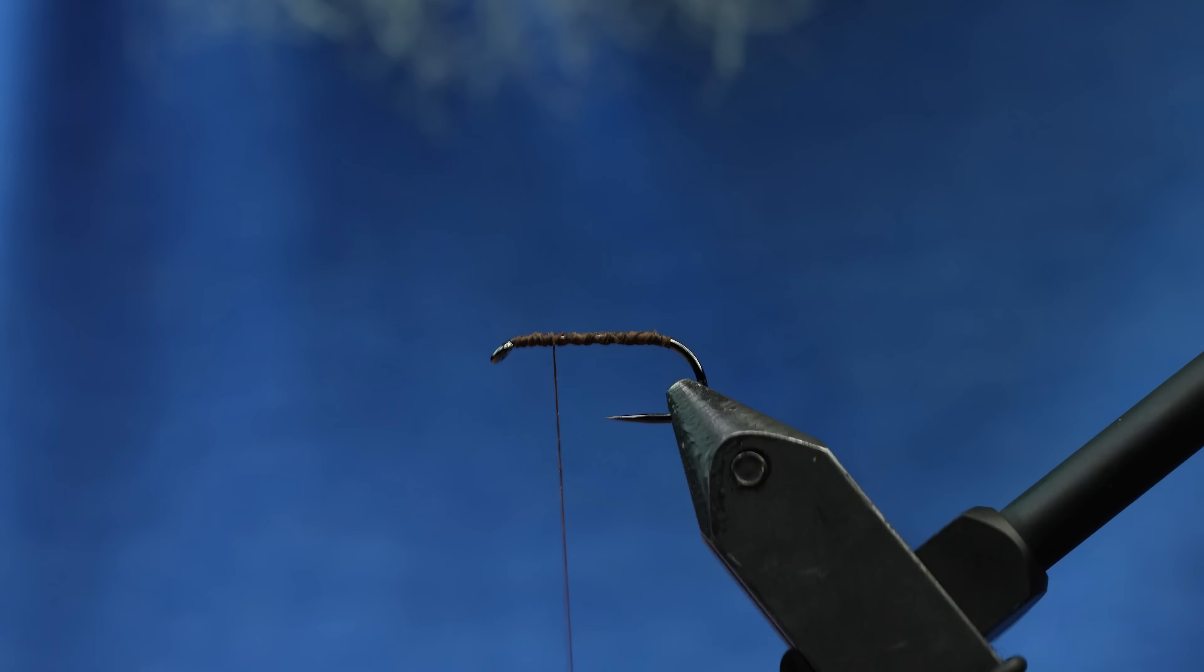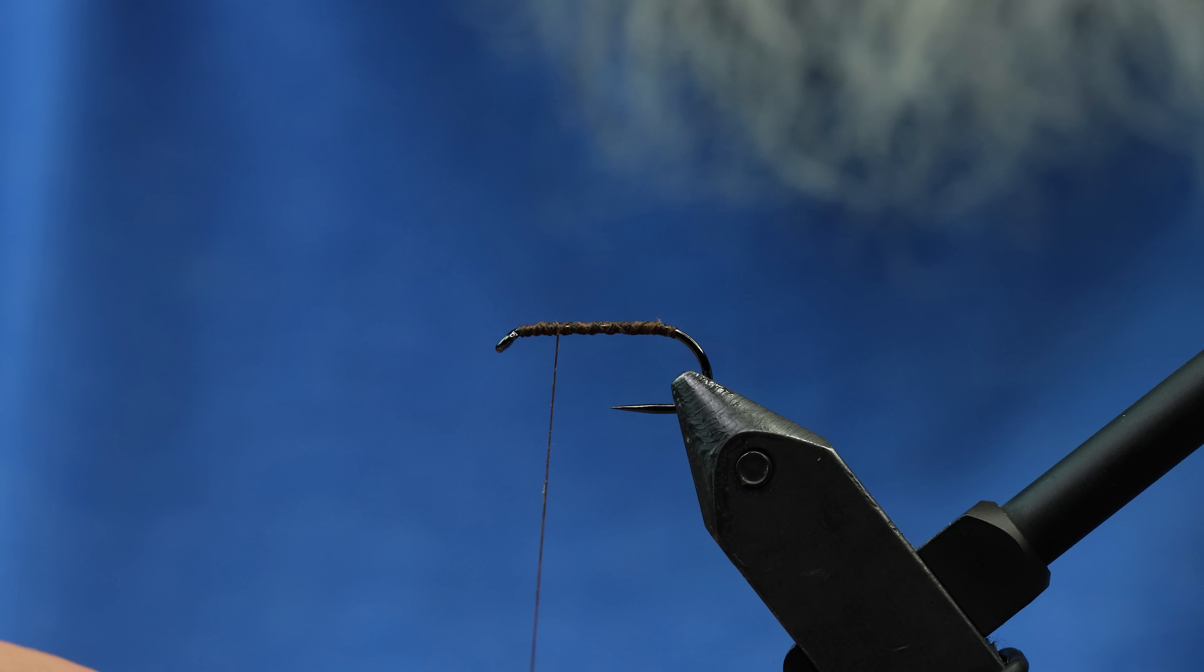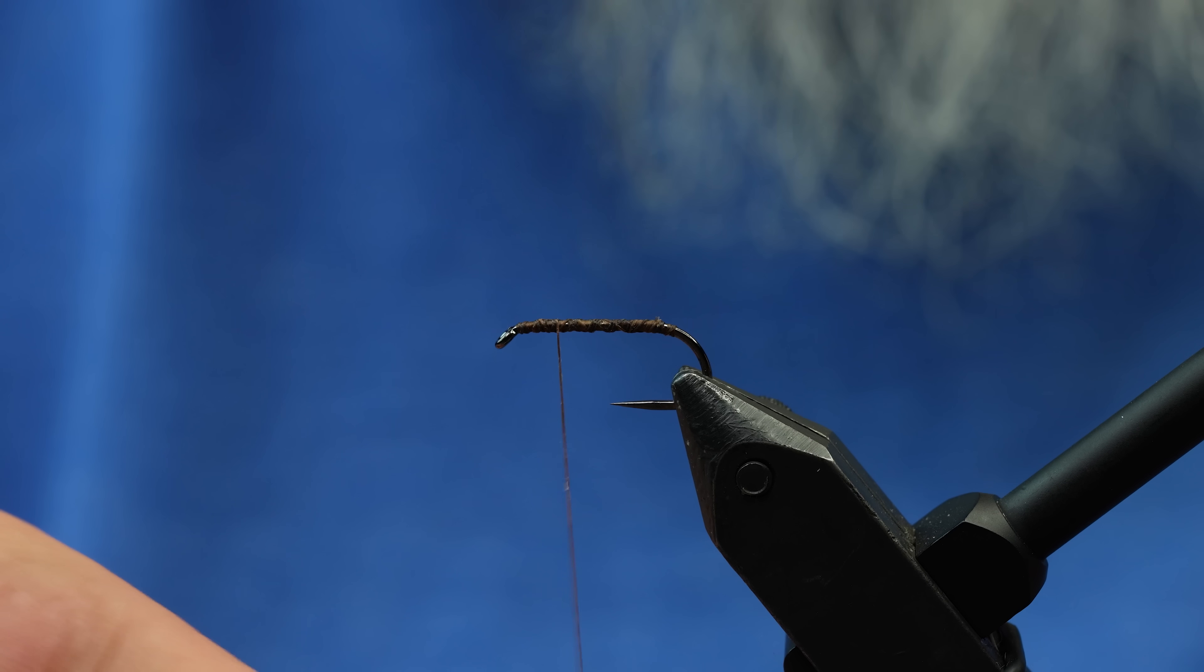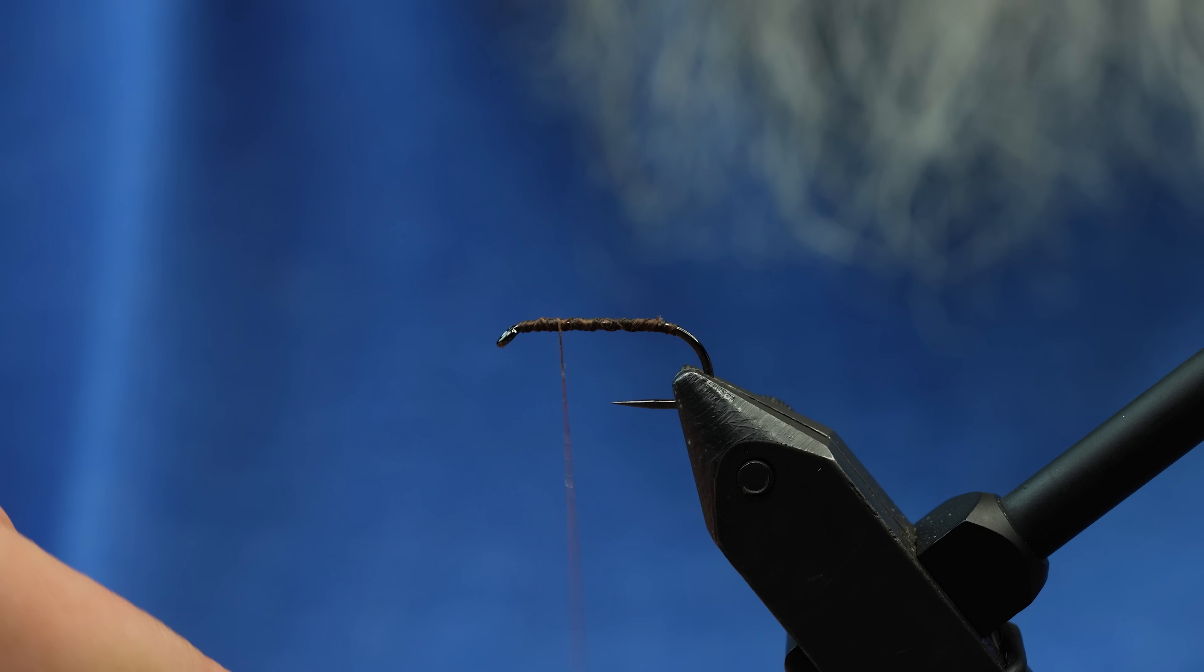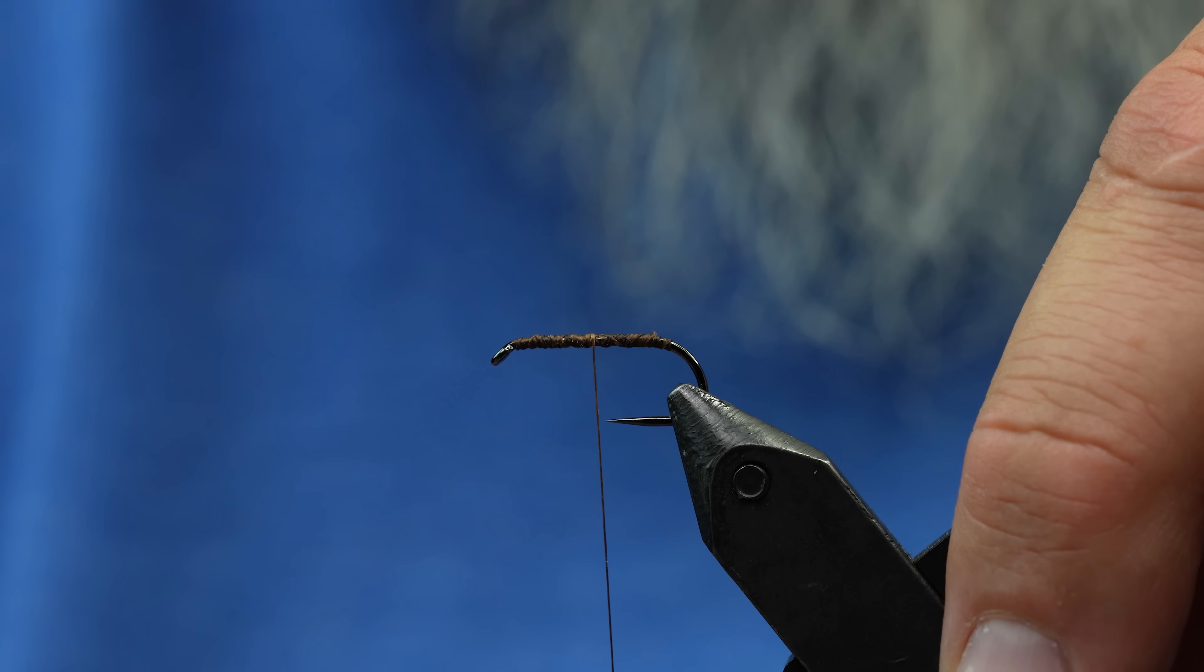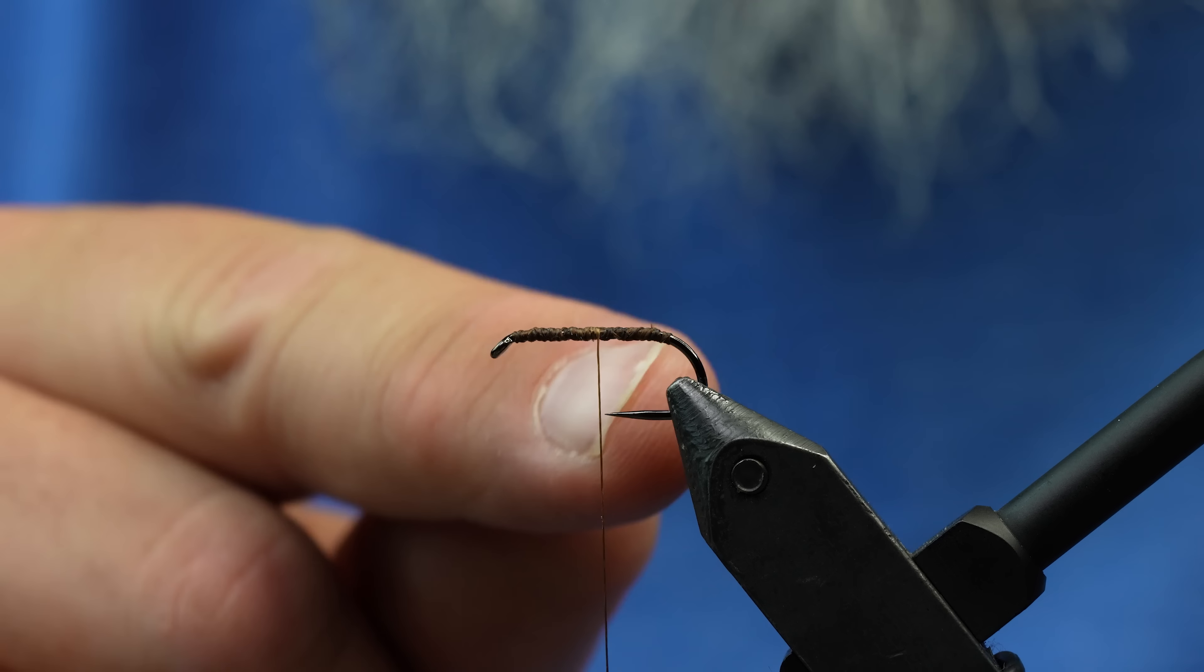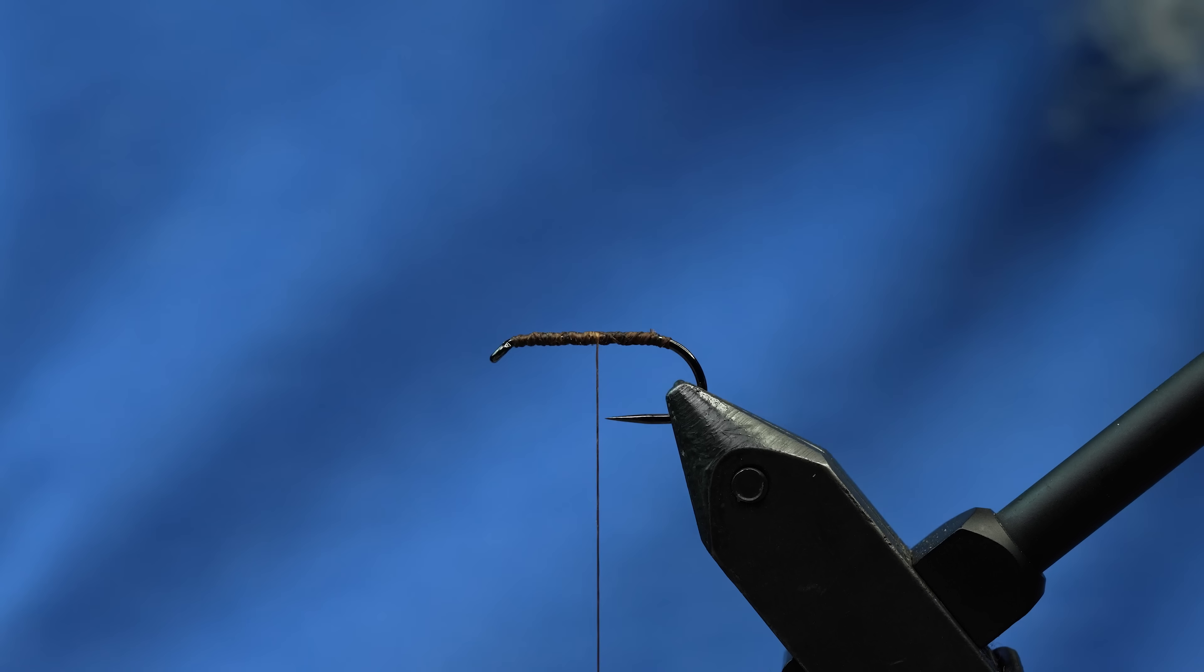Once we're nice and rough and nasty I'm going to flatten my thread out by spinning it counterclockwise and I'll let it sit about right here. If you let it hang it's right about where the hook point is, right in front of the hook point.